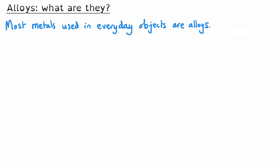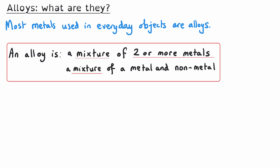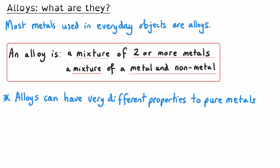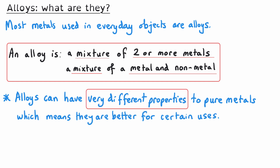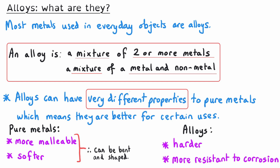Most of the metals that we use in everyday objects are alloys. An alloy is a mixture of two or more metals, or it can be a mixture of one metal with some non-metals mixed in. The reason we do this is that once we get the mixture, the properties of the metal change. Pure metals might be more malleable or softer, and the alloys we produce could be harder or more resistant to corrosion. Scientists mix together the metals to create an alloy with the properties they want.